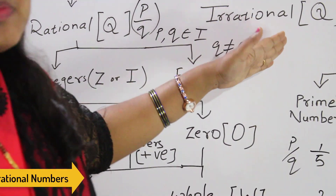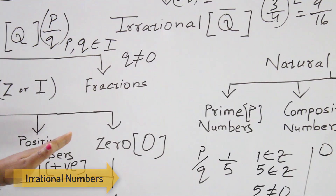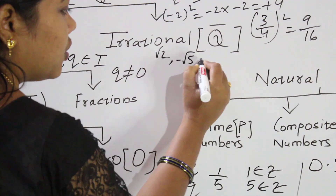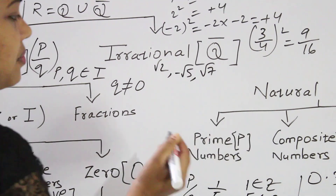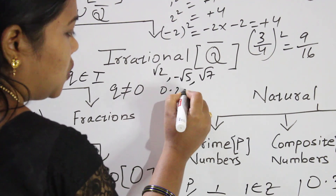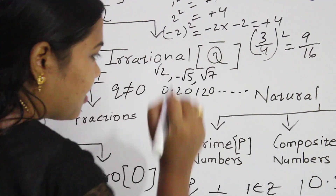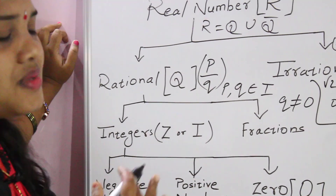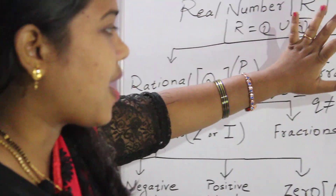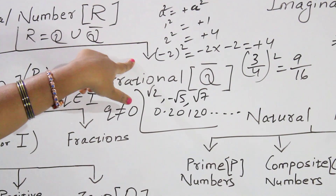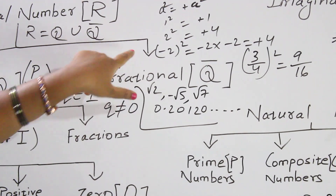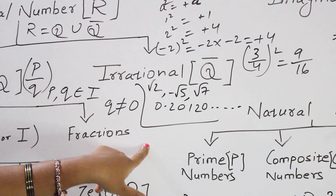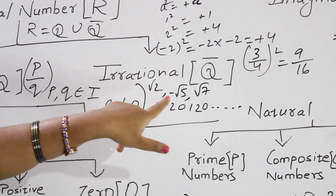So what are irrational numbers? A number which is not rational is irrational. Irrational numbers include √2, -√5, √7, and non-terminating decimals like 0.20120... Non-terminating, non-repeating decimals also come under irrational numbers.